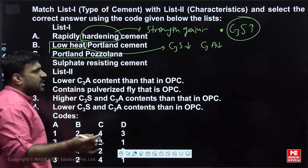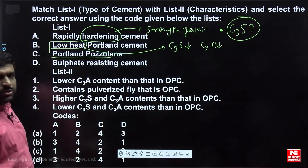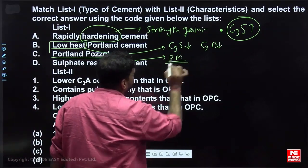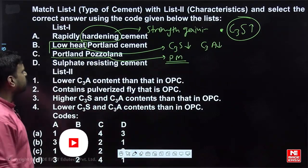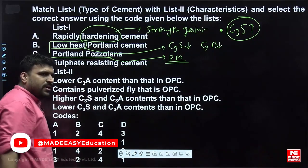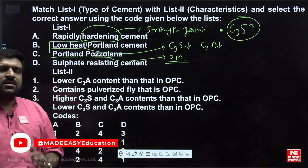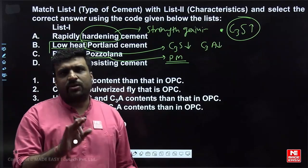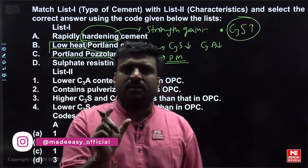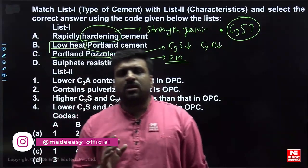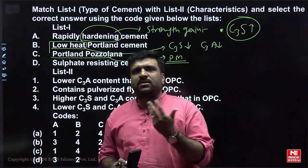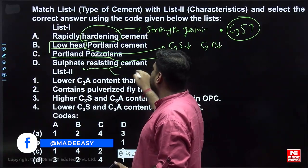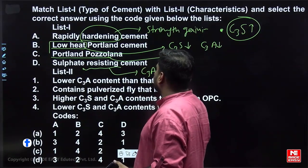Portland pozzolanic cement — the name itself tells you that we need to add pozzolanic material; only then is Portland pozzolanic cement formed. Next is sulphate resisting cement. We need resistance against sulphur. Sulphur attacks the compound C3A, because it forms calcium alumino sulphate which causes unsoundness. So to make sulphate resisting cement, we have to reduce C3A.